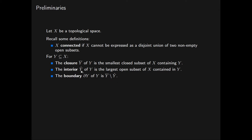Note that the interior of Y is contained in Y and that Y is contained in the closure of Y. For any topological space, the boundary of the empty subset is empty, as is the boundary of the entire space itself. This is because both the empty subspace and the entire space are both open and closed, so from the definitions of closure and interior, it follows that their boundary is empty.